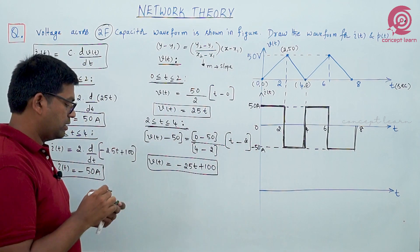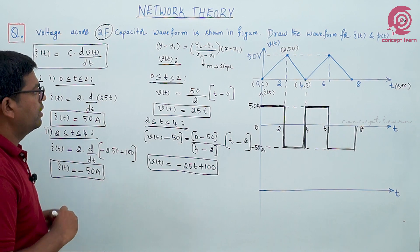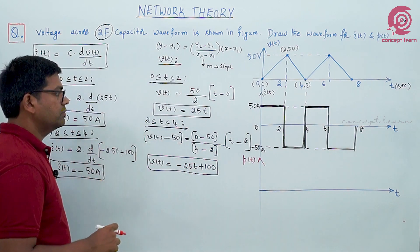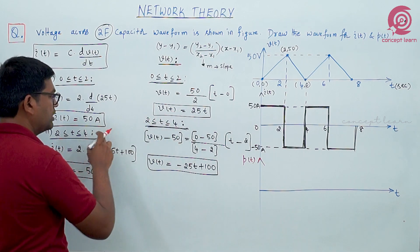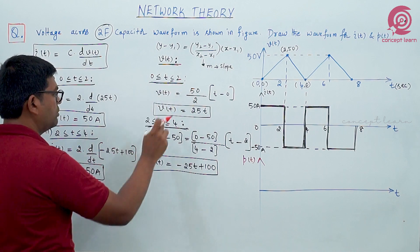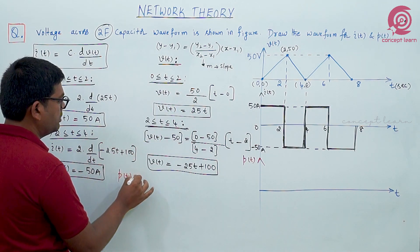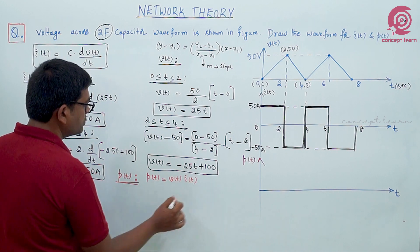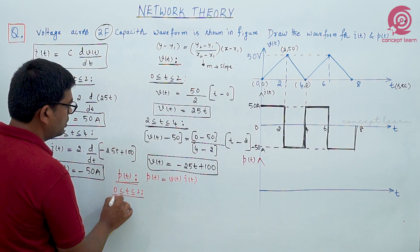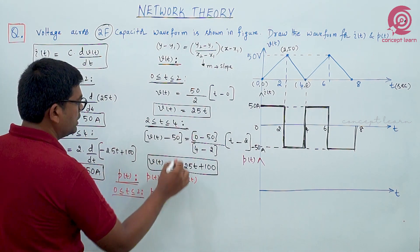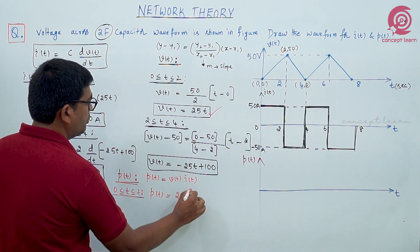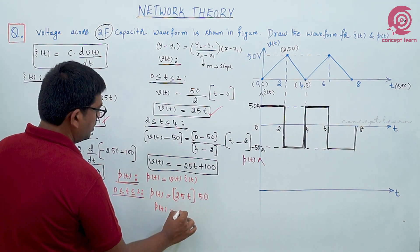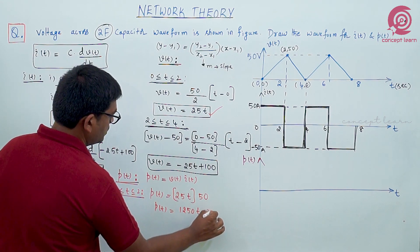Now our intention is to draw the power waveform, which I am drawing in red. We should consider voltage and current for 0 to 2 and 2 to 4 to calculate power respectively. Power is simply the product of voltage and current. First in between 0 to 2: voltage is 25t and current is 50 amperes.